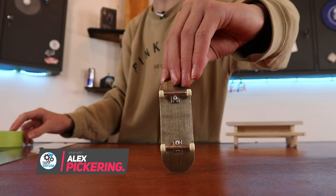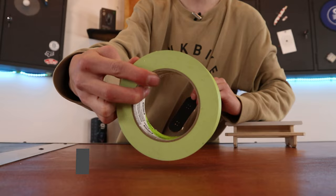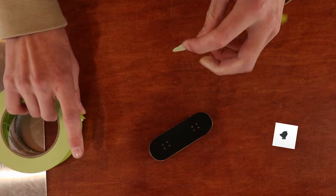The first thing you're going to want to do is clean your grip tape. All you want to do is take some masking tape as long as your fingerboard grip tape, and stick it on the board.